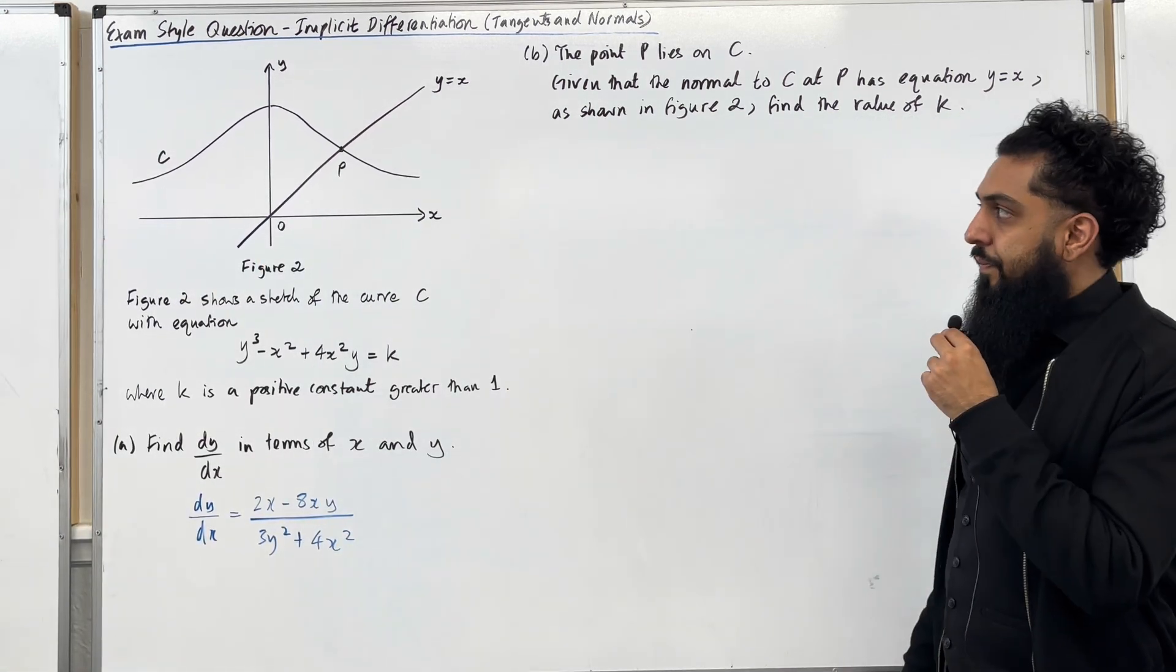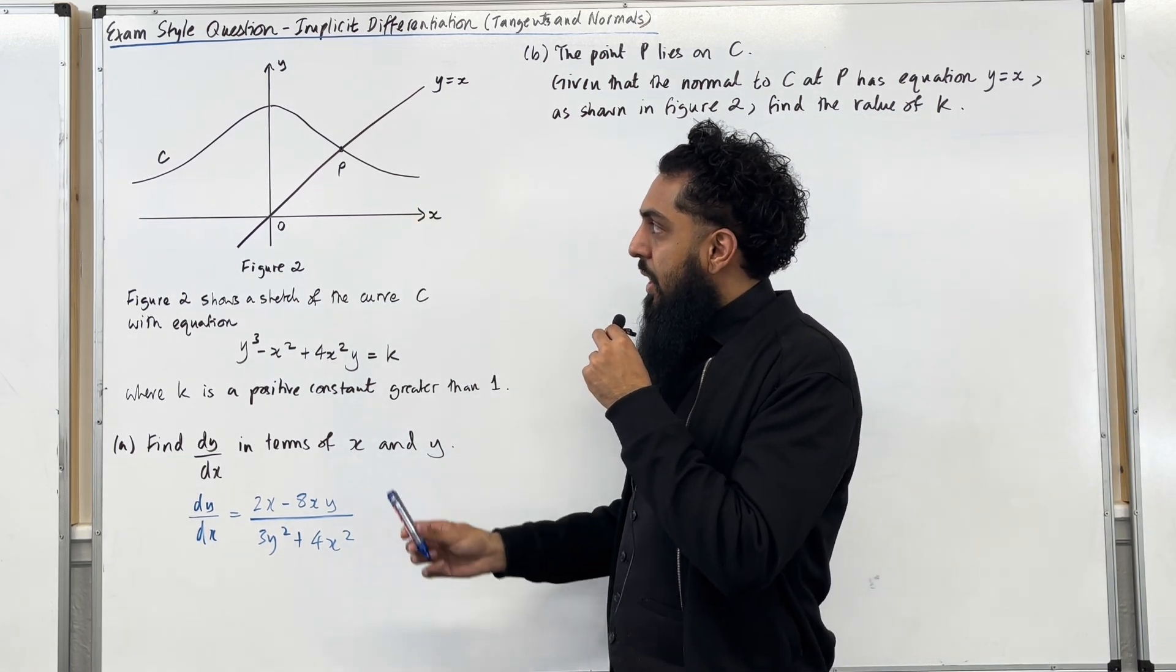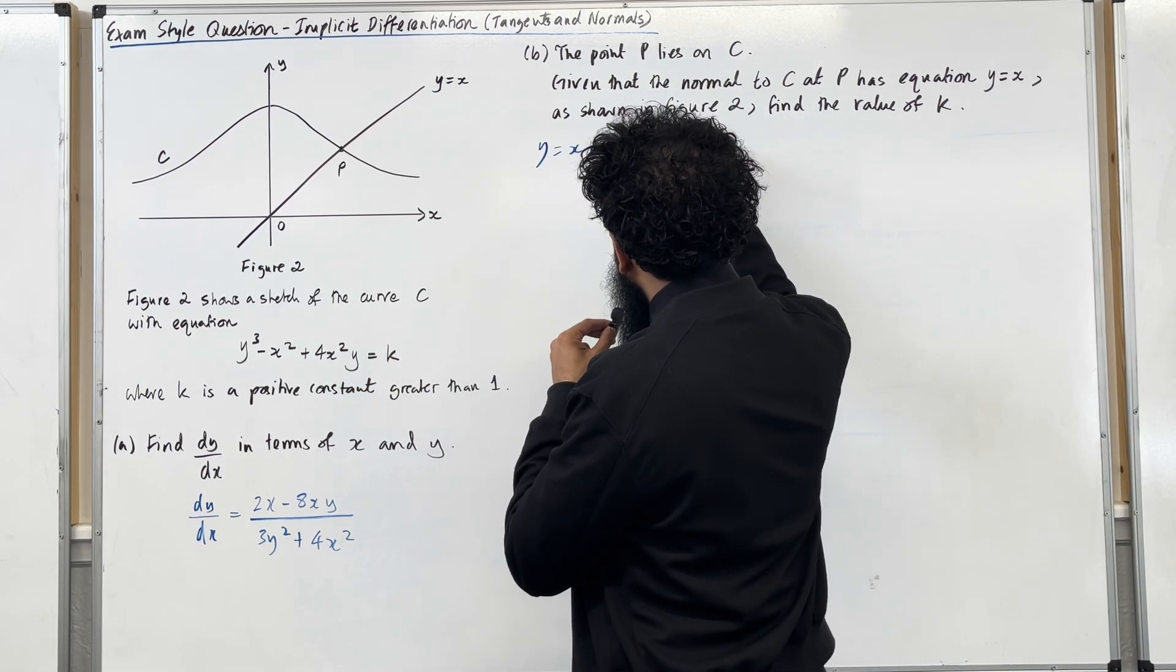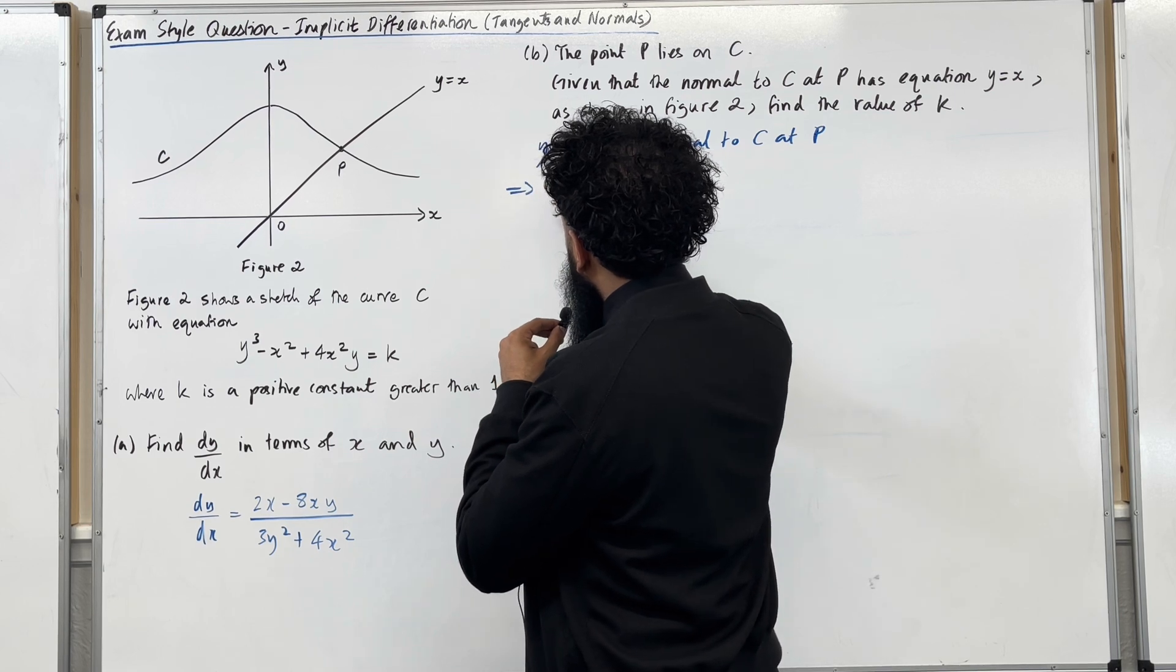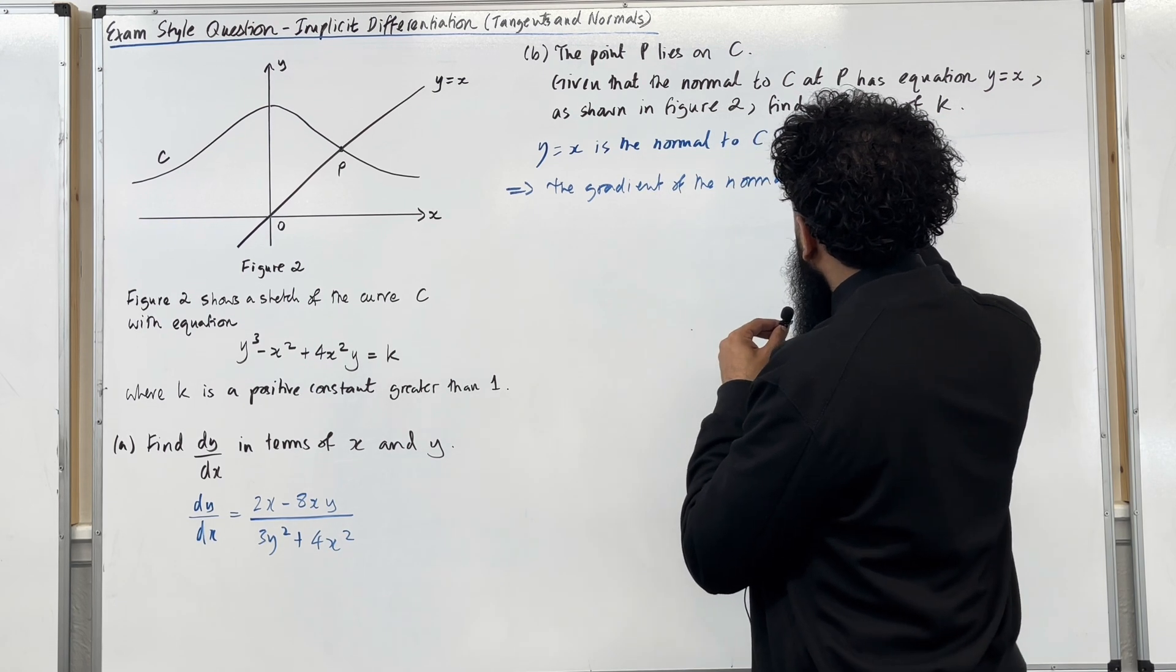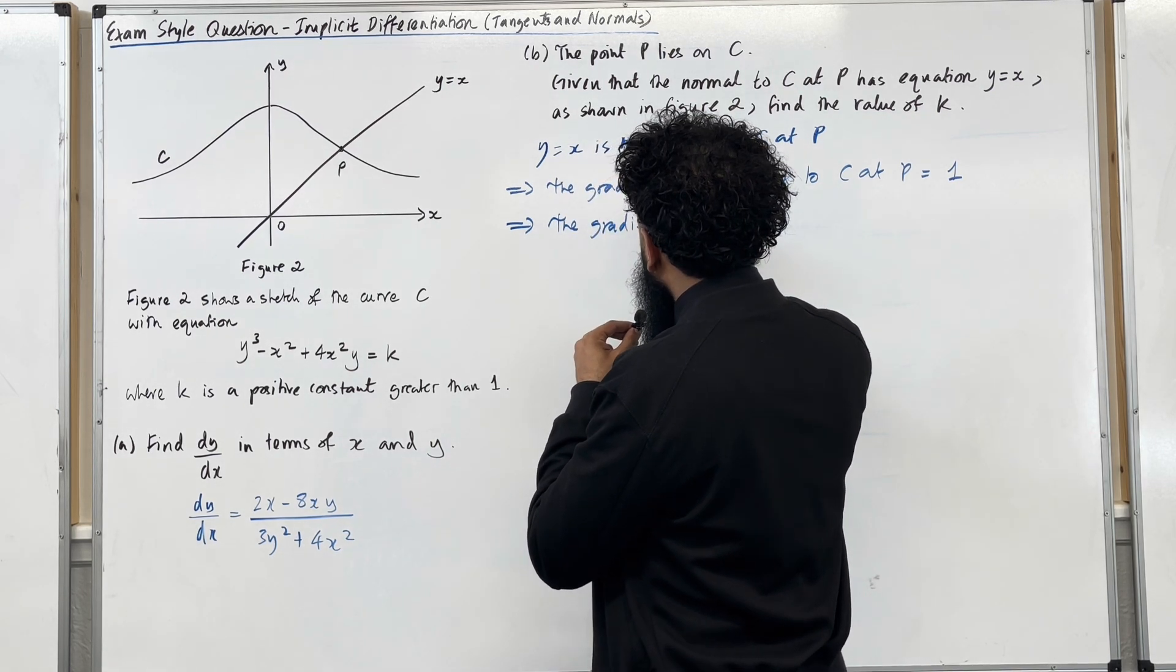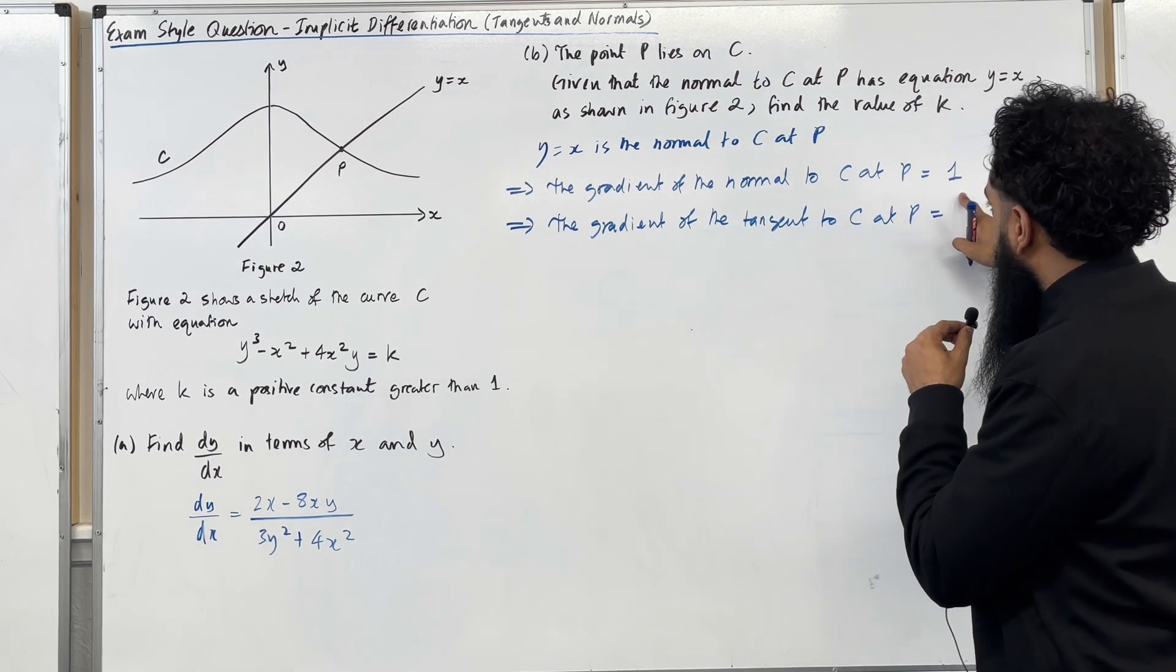Let's have a look at the solution to part B. In the question we are told that the line y equal x is the normal to the curve C at the point P. So if I was to draw a tangent to the curve C at the point P, it has to be perpendicular to the normal. I'm going to start by writing y equal x is the normal to C at P. This implies that the gradient of the normal to C at P is equal to 1.